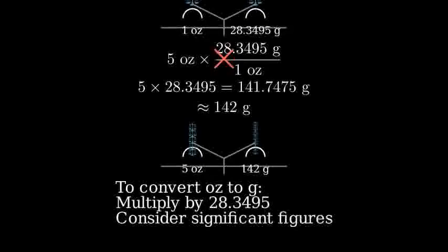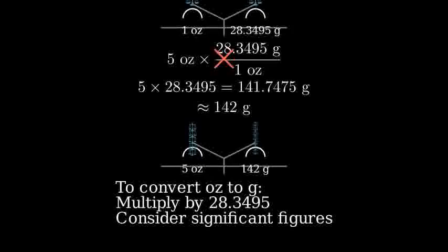So remember, when converting between ounces and grams, multiply the number of ounces by 28.3495 to get the equivalent mass in grams.